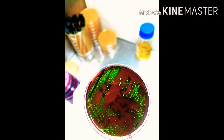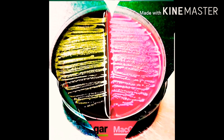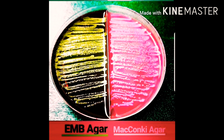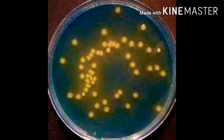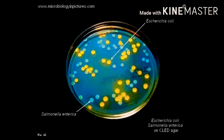E. coli gives a very characteristic color due to lactose fermentation. Colonies are black with a green metallic sheen, especially when exposed to light. On Kligler agar, E. coli appears as yellow colonies due to lactose fermentation, which distinguishes it from non-lactose fermenters that form blue colonies.